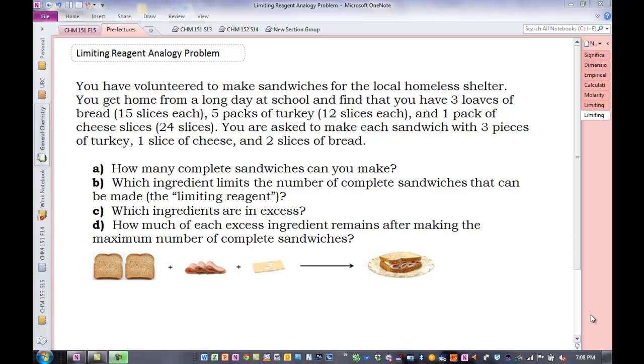So let's look at this limiting reagent analogy, something you would be familiar with: making sandwiches. Let's read through this problem together. You have volunteered to make sandwiches for the local homeless shelter. You get home from a long day at school and find that you have 3 loaves of bread (15 slices each), 5 packs of turkey (12 slices each), and 1 pack of cheese (24 slices). You are asked to make each sandwich with 3 pieces of turkey, 1 slice of cheese, and 2 slices of bread.